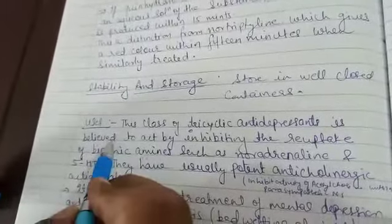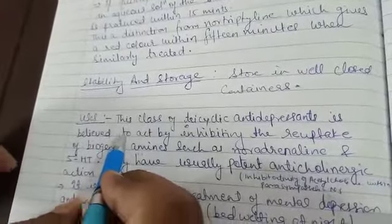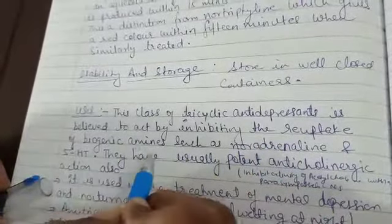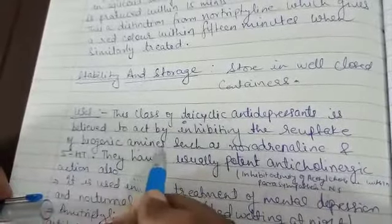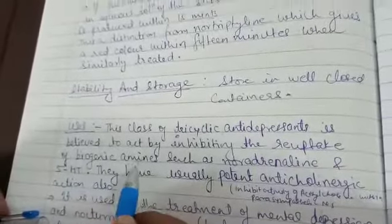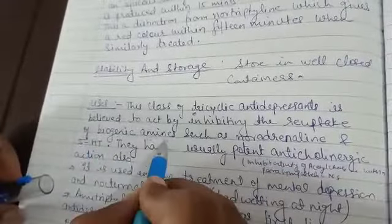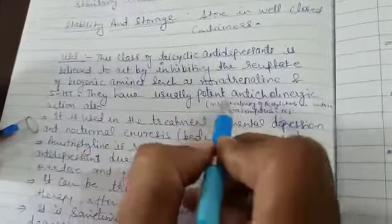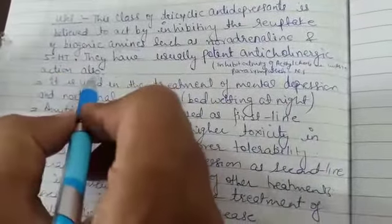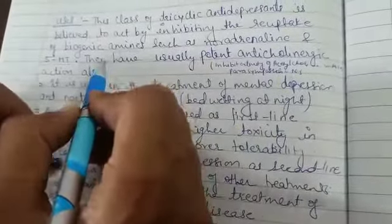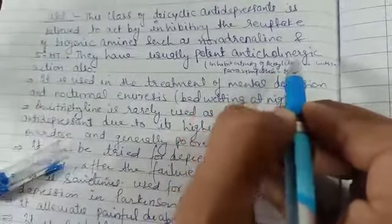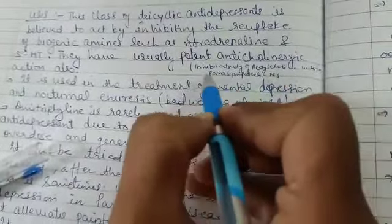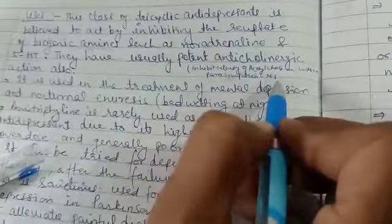Coming to some important medicinal uses and pharmaceutical applications. This class of tricyclic antidepressants is believed to act by inhibiting the reuptake of biogenic amines, such as noradrenaline and 5-HT (serotonin). They also have usually potent anticholinergic action. They also have an anticholinergic action on the nervous system.